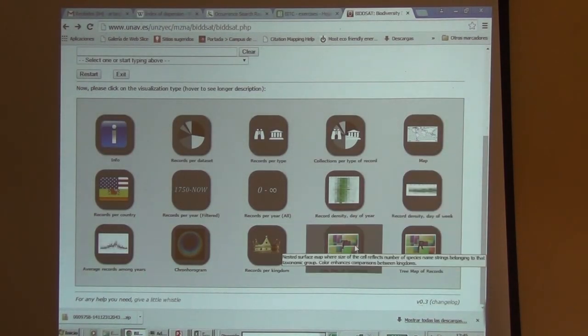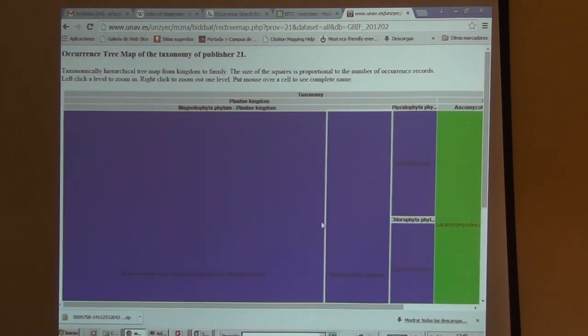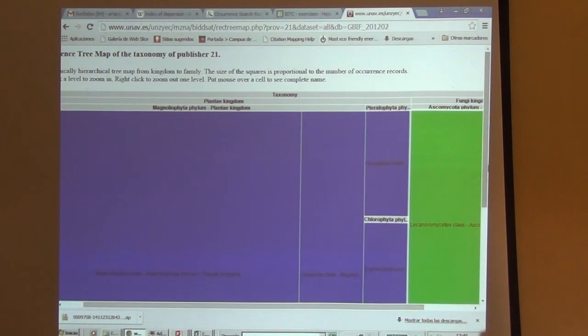Or a tree map of the taxonomy. In the morning, we saw a tree map of records, how many records we had available for each taxon group. It's downloading. This one is quite heavy. Come on, come up. Okay, this is a tree map of the taxonomy. I'm going to reduce the size so it fits.